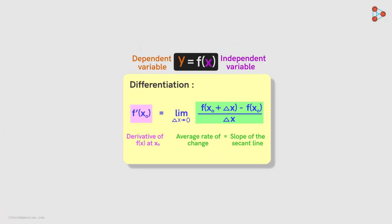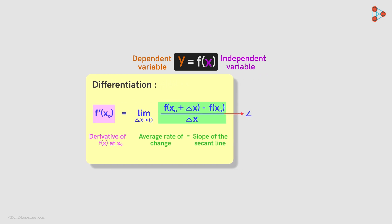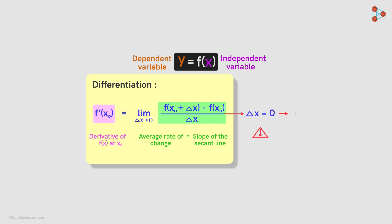We denote it by putting a dash like this on the notation for the function. Note that the limit delta x tends to zero does not mean we put delta x equal to zero in this ratio. This would result in the ratio being equal to zero divided by zero, which does not make any sense.